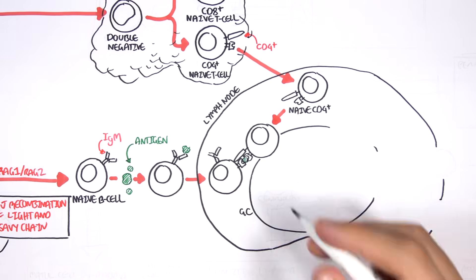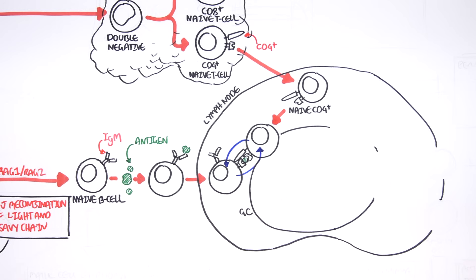Let's say this naive CD4 T cell can recognize the antigen being presented by the B cell. What happens next is called co-stimulation. The naive CD4 T cell stimulates the naive B cell and the naive B cell stimulates the CD4 T cell. Alternatively, a fully activated CD4 T cell could have activated the naive B cell. What we end up with is an activated CD4 T cell and an activated B cell.